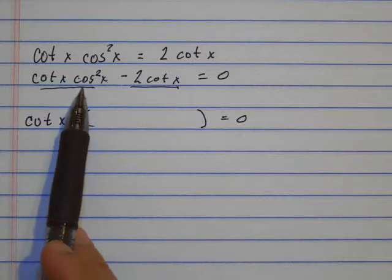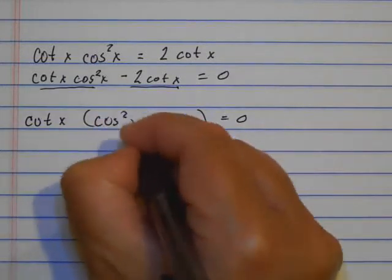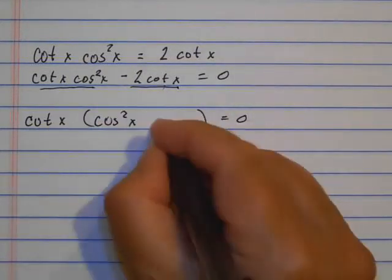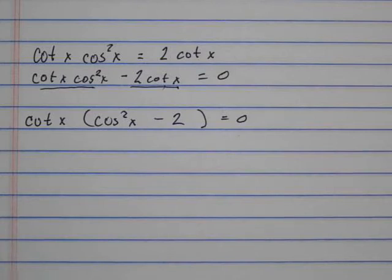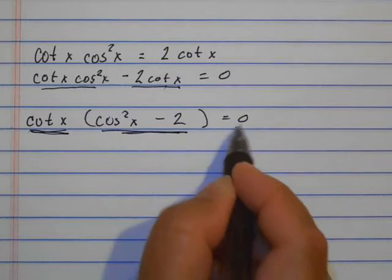So after I pull a cotangent out of this one, what's left is cosine squared. After I pull a cotangent out of this one, I'm left with subtract 2. So I have this times this equals 0.